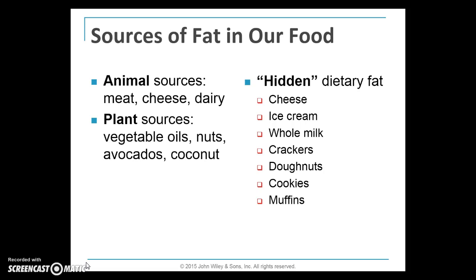It's important to understand the sources of fat in our food. Visible sources include animal sources like meat, cheese, and dairy, and plant sources like vegetable oils, nuts, avocados, and coconut. Hidden dietary fats include whole-milk cheese, ice cream, crackers — Ritz crackers now even offer reduced-fat versions because they have added oils, sometimes hydrogenated — as well as donuts, cookies, and muffins.